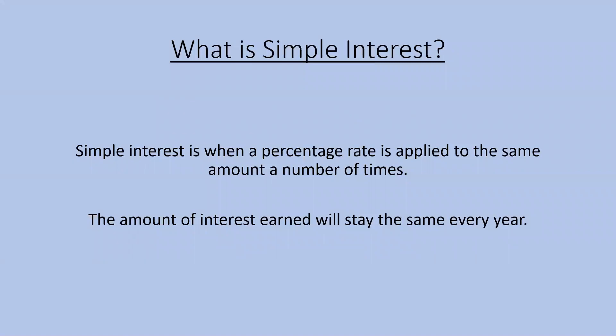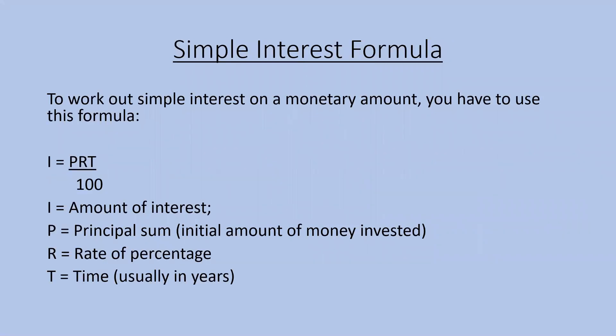What is simple interest? Simple interest is when a percentage rate is applied to the same amount a number of times. The amount of interest earned will stay the same every year, so this is the amount of interest that will have to be paid back over a period of time. To work out simple interest we use the formula I equals P times R times T divided by 100.